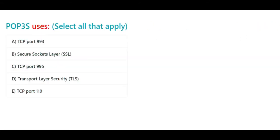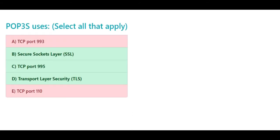POP3S uses — select all that apply: a. TCP port 993, b. Secure Sockets Layer (SSL), c. TCP port 995, d. Transport Layer Security (TLS), e. TCP port 110. The correct answers are b. Secure Sockets Layer (SSL), c. TCP port 995, and d. Transport Layer Security (TLS).